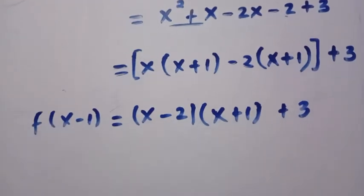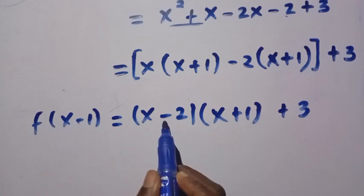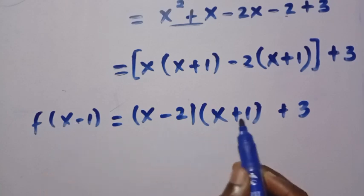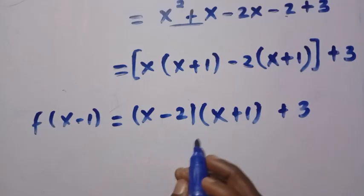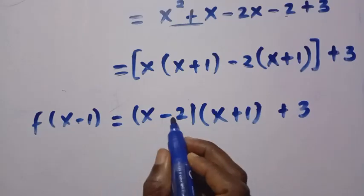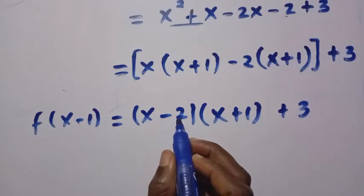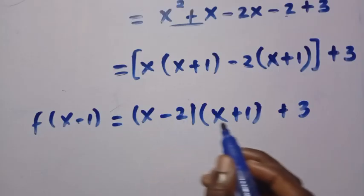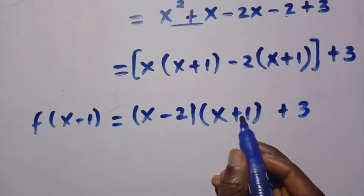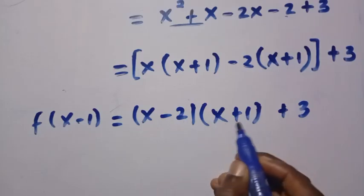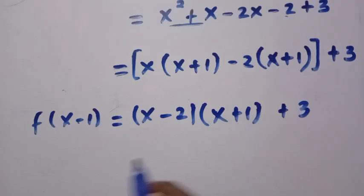Then, since this is what we have, here we need x minus 1. And I want to make this as x minus 1 as well. Here we have x plus 1. What I will do is, I will be changing everything here to x minus 1, then minus 1. Also this is x minus 1. And we have plus 2 to get x plus 1.